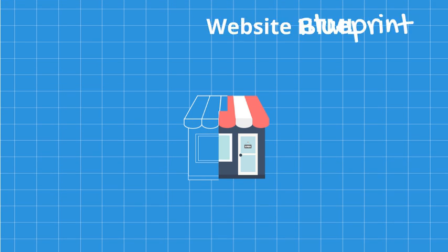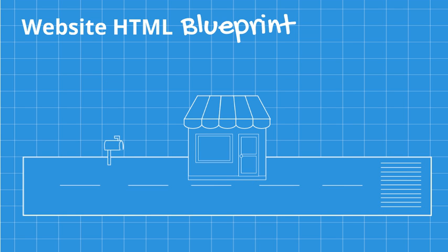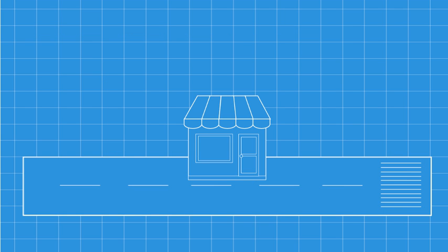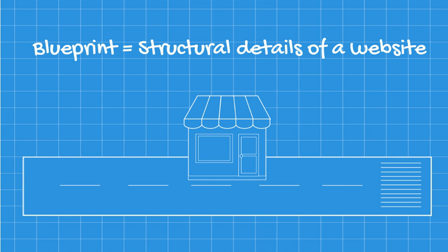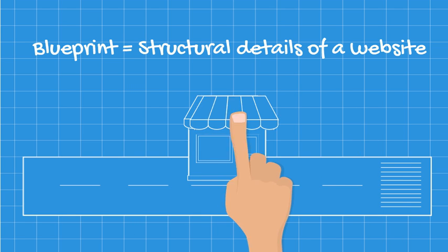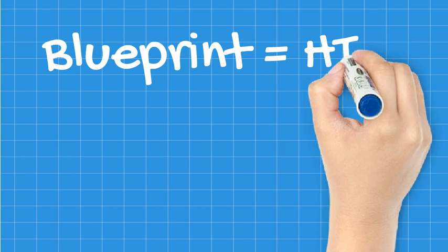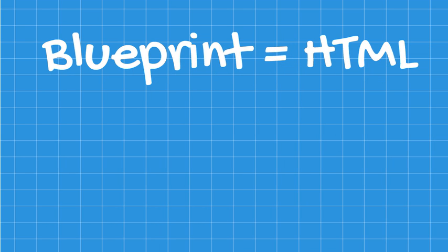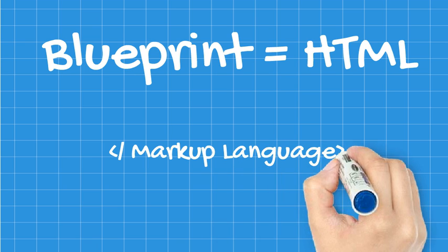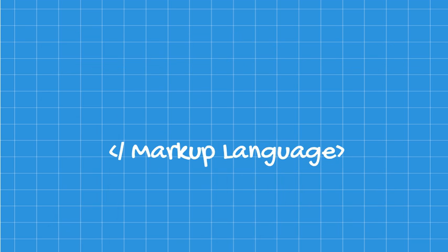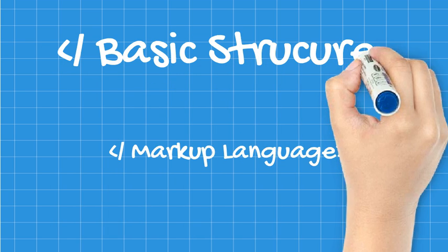The first thing developers will do is to create a blueprint, just like the architects do. This blueprint is where all the base details are put together — rooms, windows, walls, ceiling, columns, stairs, and other stuff. The blueprint of a website is called an HTML document. HTML is a markup language used to define the basic structure of a website.